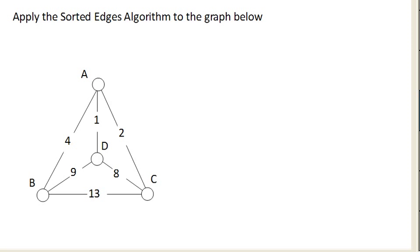So the problem with the nearest neighbor algorithm is that it's greedy. It doesn't look ahead. And so this time, we're going to use a different method called sorted edges, or the cheapest link algorithm.